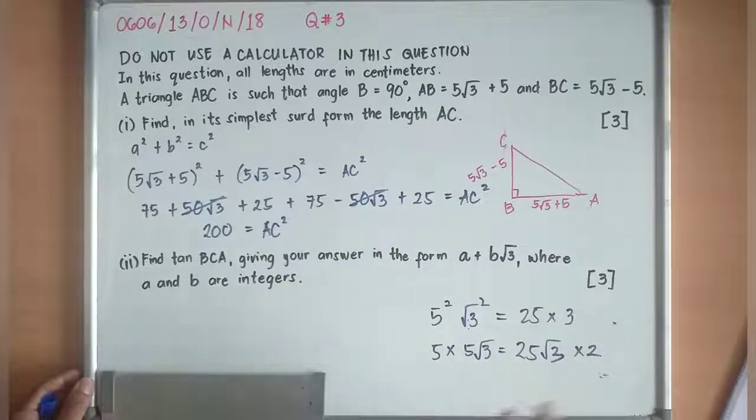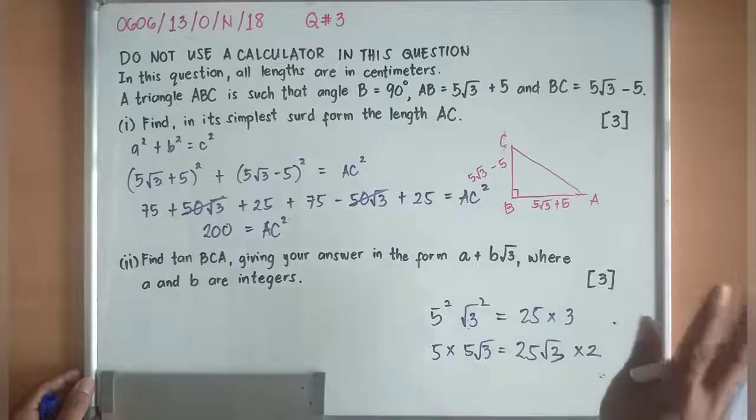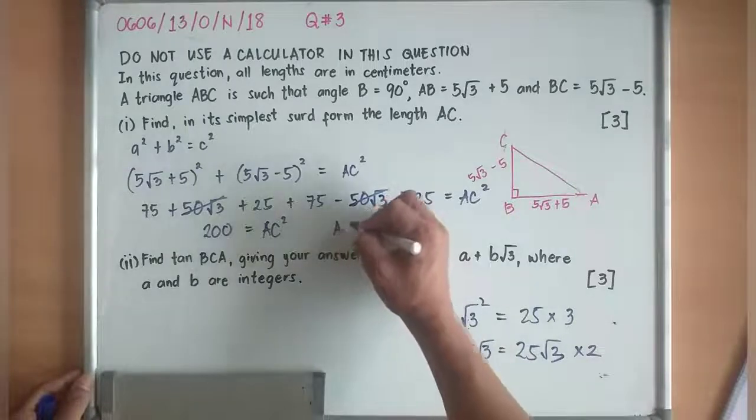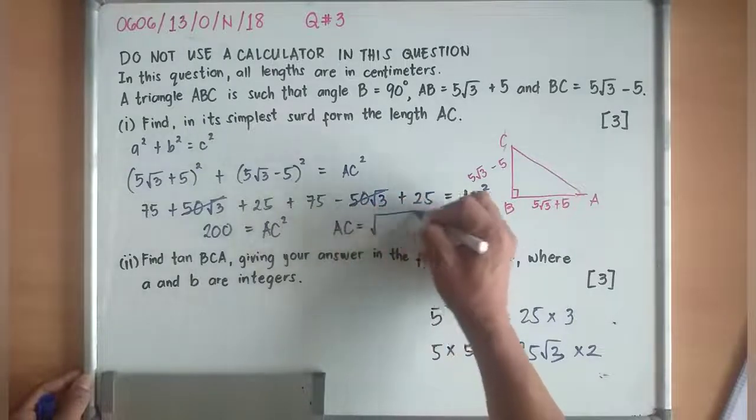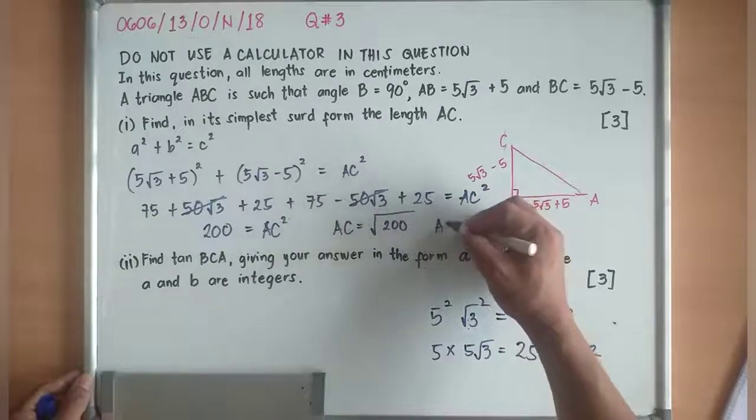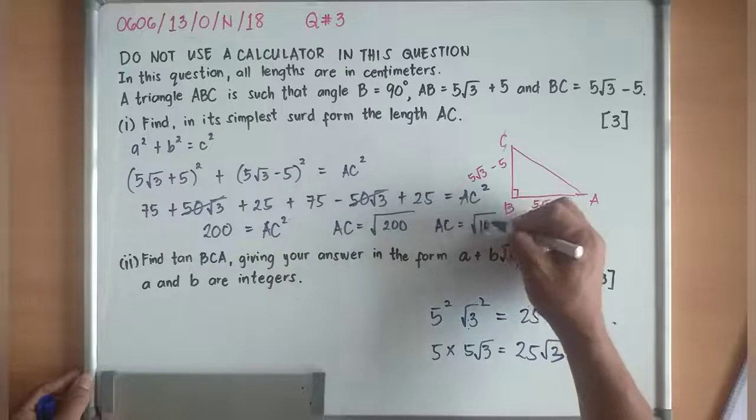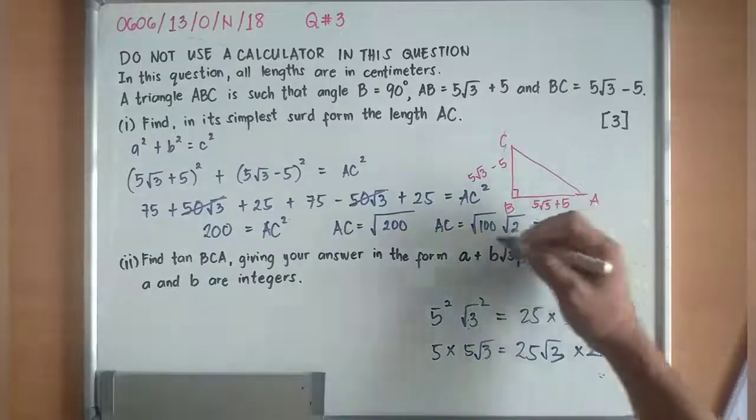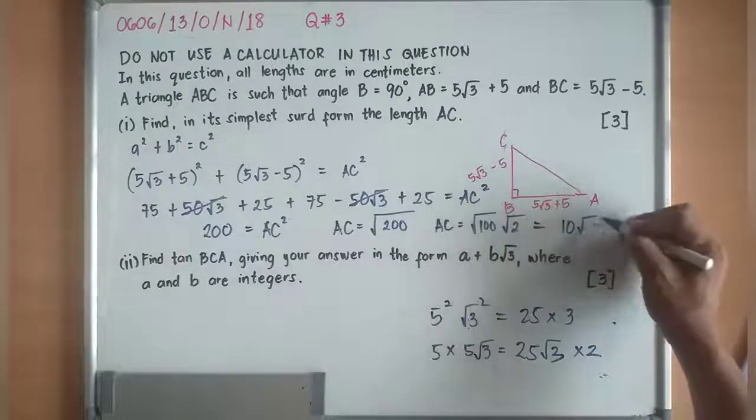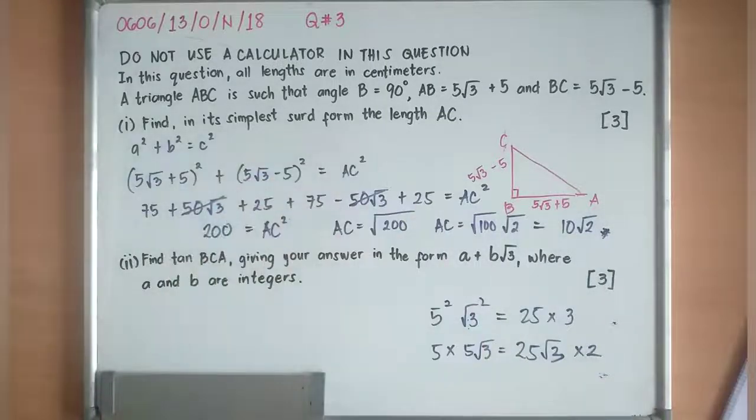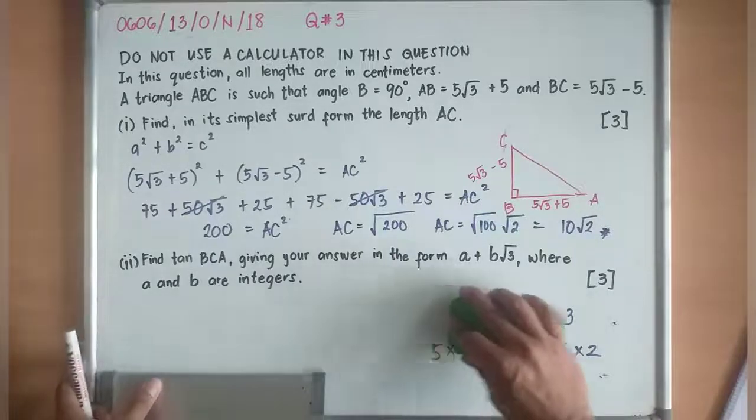I'll just basically square root both sides. I am not allowed to have a negative value because we are talking about distance or length. So AC is equivalent now to √200, and √200 is equivalent to √100 × √2, which is now equivalent to 10√2. So the simplest surd form of the length AC is 10√2.